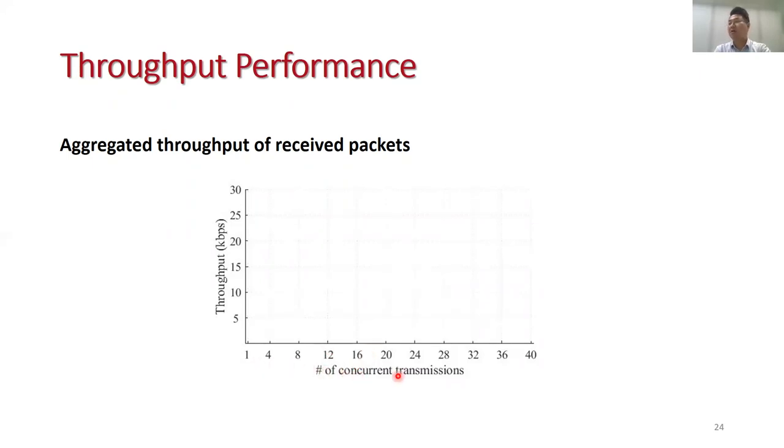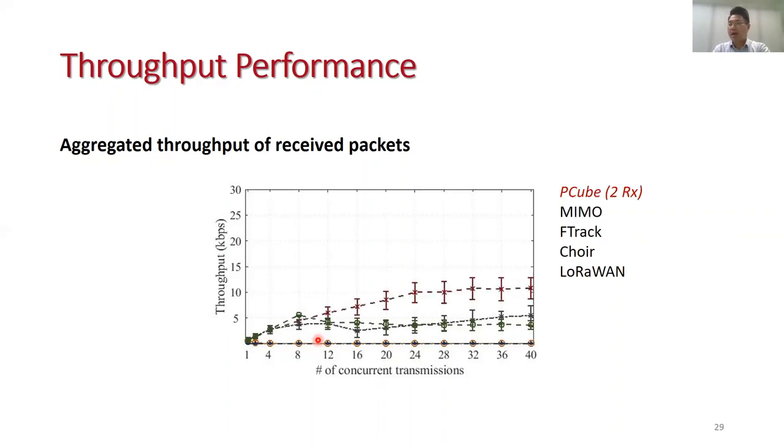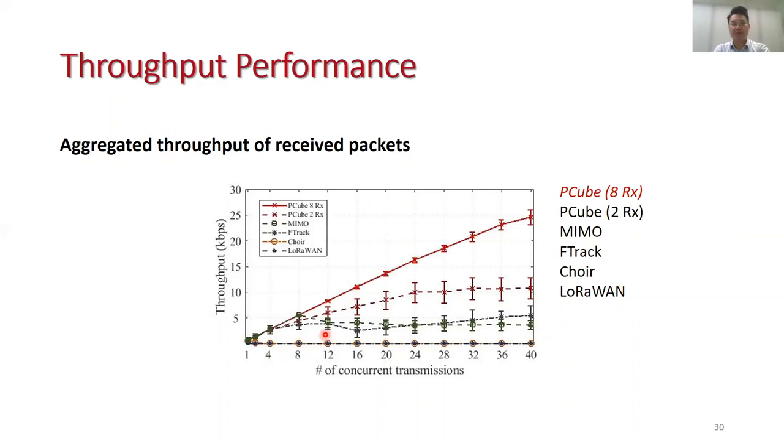In the experiments, we control multiple LoRa nodes to transmit at the same time, making the packets of all nodes colliding together. The x-axis displays the number of concurrent transmissions, which increases from 1 to 40. The y-axis displays the aggregated throughput of all correctly received packets. The throughput of LoRa1 is close to zero because the standard LoRa decoder cannot decode concurrent packets. Choir can decode at most two concurrent packets in our experiment. F-Track can decode more packets, but the throughput stops increasing when more than four packets are transmitted. MIMO can decode eight concurrent packets because the maximum number of antennas is actually eight. These two curves correspond to the performance of PQueue. The throughput of PQueue increases almost linearly with the number of concurrent transmissions, and the maximum number of packets that can be decoded by PQueue is about 36 when eight antennas are used.